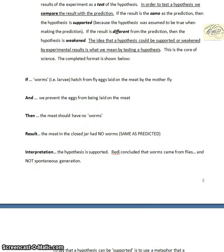So now we just include the results as we know them to be. The meat in the closed jar had no worms. Since that's the same as predicted, so same as the then statement up here, then our interpretation is the hypothesis is supported. And what was the hypothesis? That the worms are hatching from fly eggs. So you see the interpretation then is the explanation of the results. Why did the closed jar have no worms? Because the flies couldn't get there to lay the eggs.